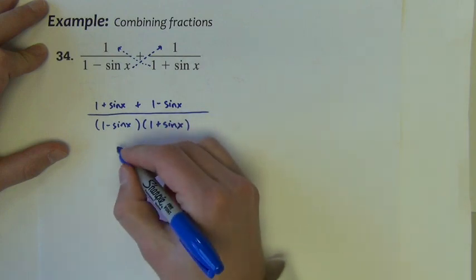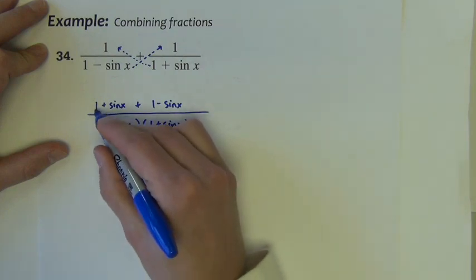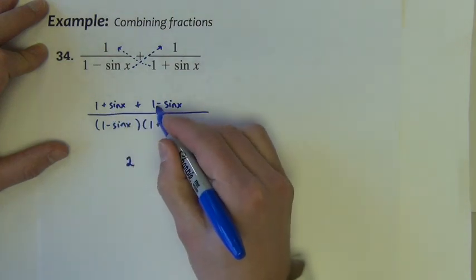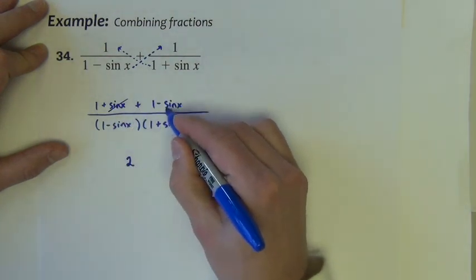So what can we do with that? In the numerator, if I collect like terms, the 1 plus 1 makes 2. Sine x minus sine x, well, those cancel out.